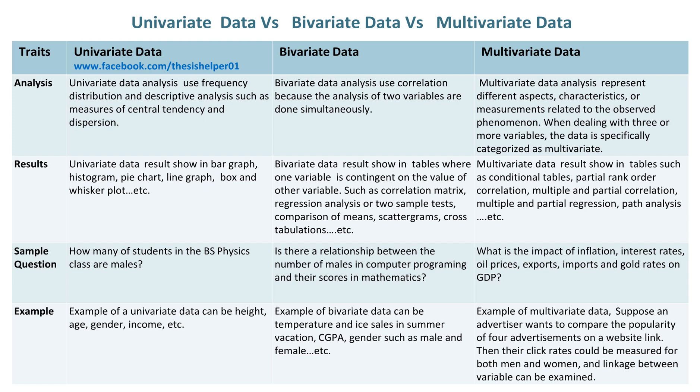Whereas examples of bivariate data include temperature and ice sales in summer vacation, CGPA and gender (male and female), etc. Whereas for multivariate data, suppose an advertiser wants to compare the popularity of four advertisements on a website. Their click rates could be measured for both men and women, and linkages between variables can be examined.